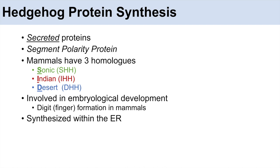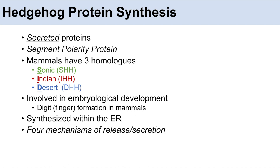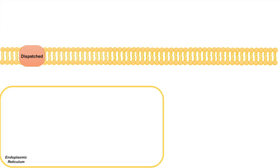The hedgehog proteins themselves are synthesized within the endoplasmic reticulum, and there are actually four mechanisms of release and secretion which we'll talk about shortly. Hedgehog proteins get synthesized as a precursor protein of about 45 kilodaltons in weight.